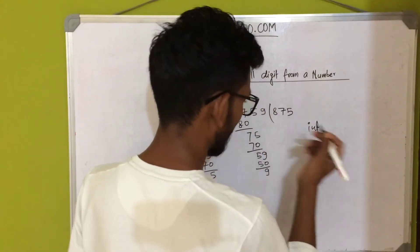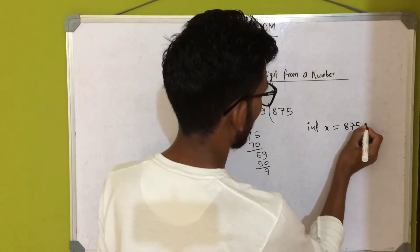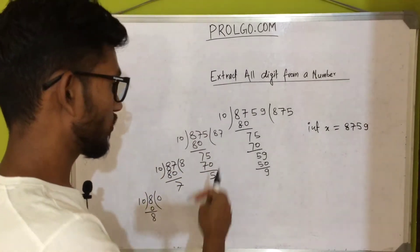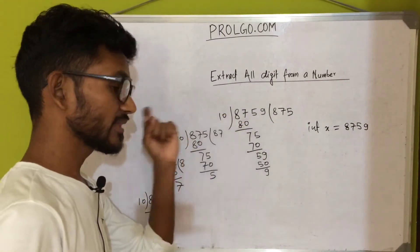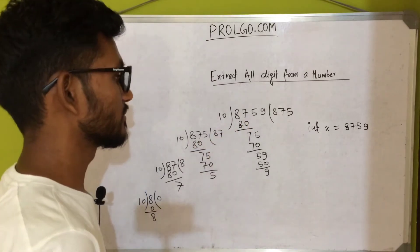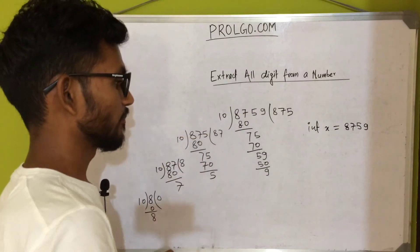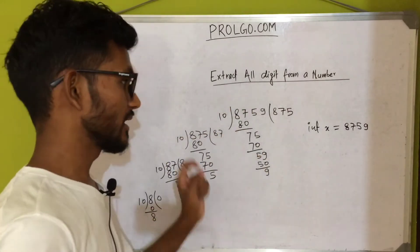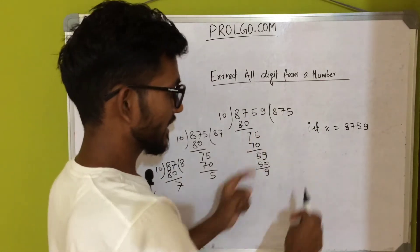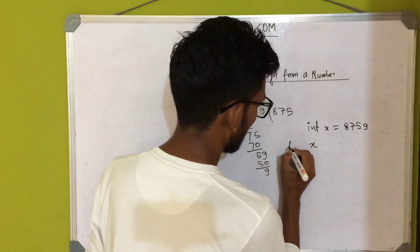Suppose we save this number in an integer variable, let's say x = 8759. One more thing I'd like to explain: why we divide by 10 only — because this number is in the decimal number system. That's the main reason. If it were octal, we would divide by 8.